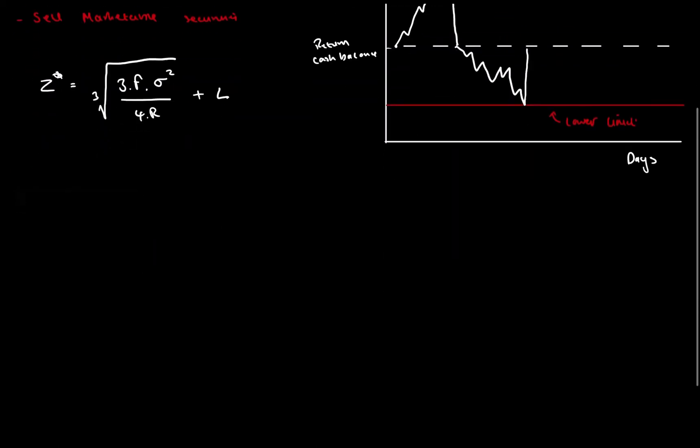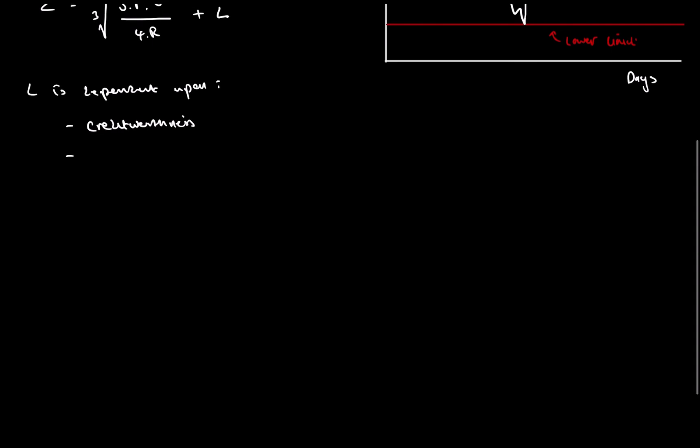Now, L is dependent upon the creditworthiness of the business. Now, the more creditworthy, meaning they can get a loan more easily, meaning that there's no need to have a high lower limit. We can have quite a low lower limit because we can easily have access to money. So what's the point in having a high lower limit? Essentially, that's just wasting money.